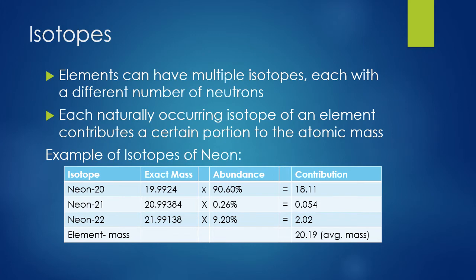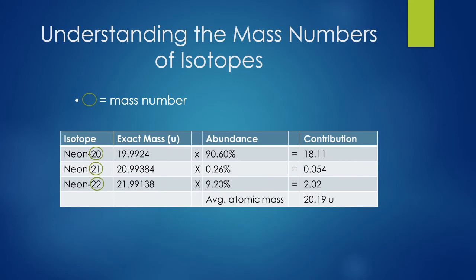Let's look more closely at isotopes. Elements can have multiple isotopes that occur naturally, each with a different number of neutrons — the number of protons stays the same. Here's an example with neon. There are three different isotopes of neon: neon-20, neon-21, and neon-22. The number after the dash is the mass number. So neon-20 has a mass number of 20, neon-21 has a mass number of 21, and so on. For all three isotopes, the number of protons remains the same — it's the neutrons that differ.